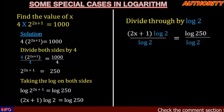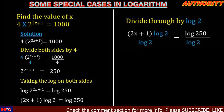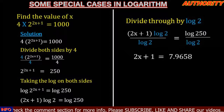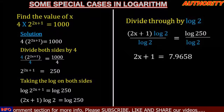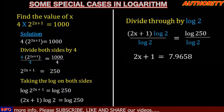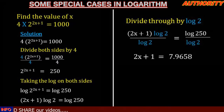We have 2x plus 1 times log 2 divided by log 2 equal to log 250 divided by log 2. On the left-hand side, log 2 cancels log 2, leaving us with 2x plus 1. And log 250 divided by log 2 gives us 7.9658.